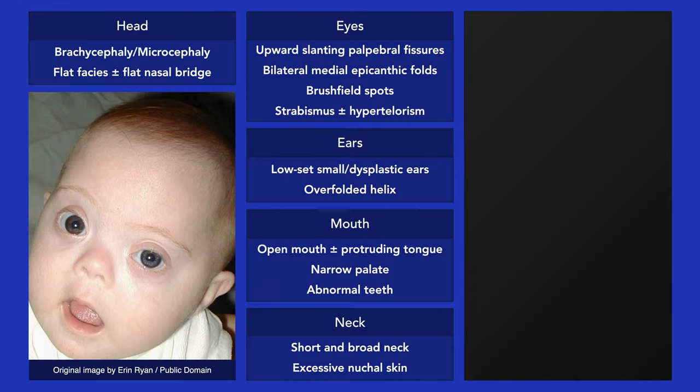Individuals with Down syndrome often have upward-slanting palpebral fissures with epicanthal folds and wide-spaced eyes, a flat nasal bridge, and an open mouth with a protruding tongue.